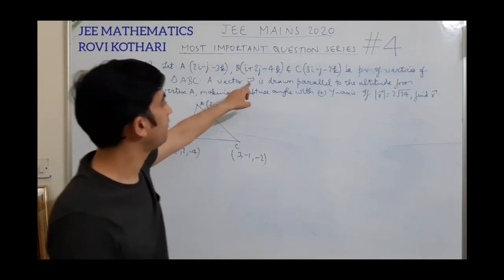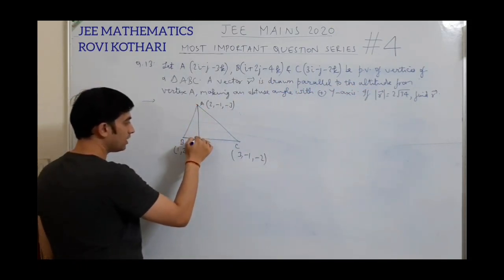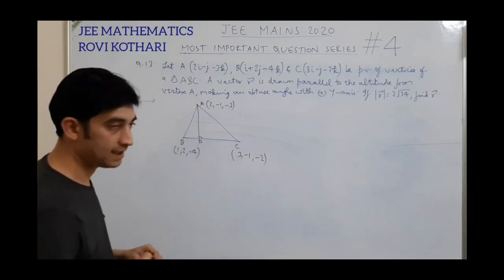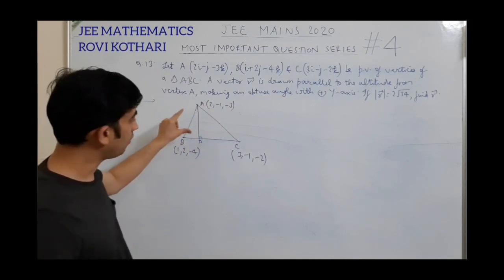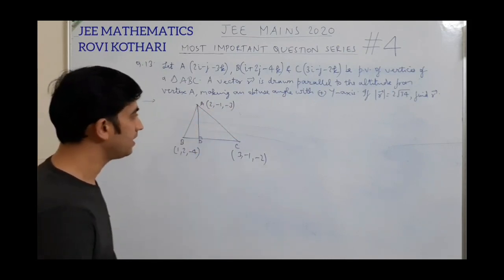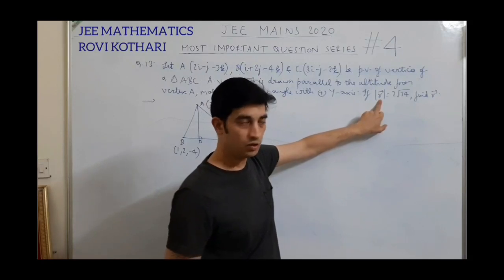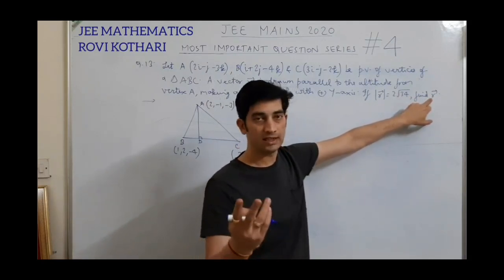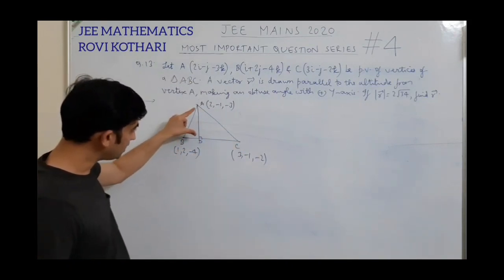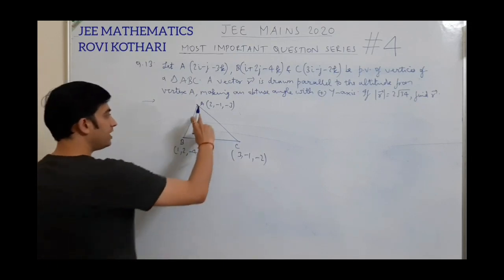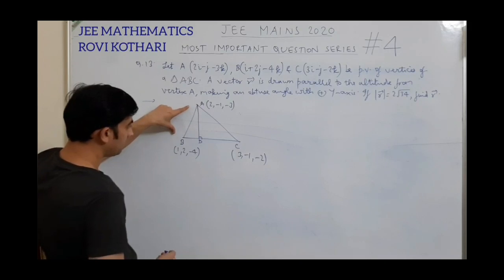I need to write a vector which is parallel to the altitude from A. Let AD be the altitude from vertex A onto BC. I need to first find this vector, then I can write a vector parallel to it. I can always write a vector parallel to a given vector by writing the unit vector along it, and the magnitude is already known. So I just need the direction of vector AD — magnitude is given, direction is parallel to the altitude.